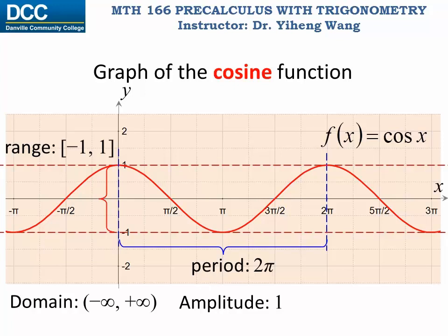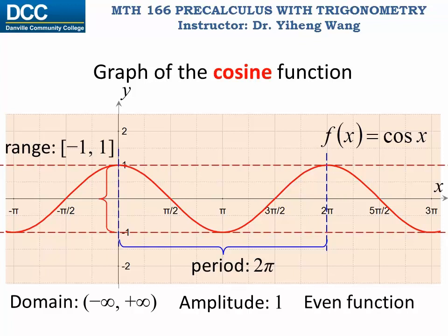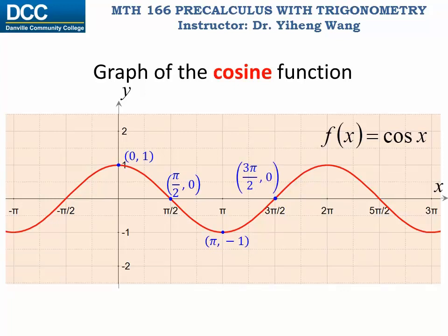The graph of the cosine function is symmetric about the y-axis, which makes it an even function. To sketch the cosine function, it is helpful to remember the five special points in the first period: the maximum (0, 1), the intercept (π/2, 0), the minimum (π, −1), the intercept (3π/2, 0), and another maximum (2π, 1). Then the graph repeats itself.